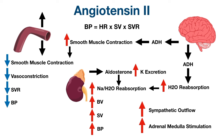ACE inhibitors also affect the kidneys. Normally, angiotensin 2 increases sodium and water reabsorption in the proximal tubule. Without angiotensin 2, we have less reabsorption, decreasing blood volume, stroke volume, and blood pressure. ACE inhibitors also decrease angiotensin 2 stimulation of aldosterone from the adrenal cortex, resulting in less sodium and water reabsorption in the distal tubule, which also decreases blood volume, stroke volume, and blood pressure.